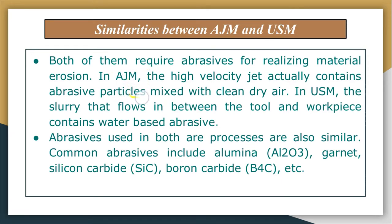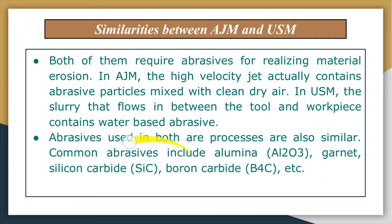Both processes require abrasives for realizing metal erosion. In abrasive jet machining, the high-velocity jet contains abrasive particles mixed with a clean dry carrier gas. In ultrasonic machining, the slurry that flows between the tool and the workpiece contains water-based abrasives. Another similarity is that the abrasives used in both processes are similar, and commonly used abrasives include alumina (Al₂O₃), garnet, silicon carbide (SiC), and boron carbide (B₄C).